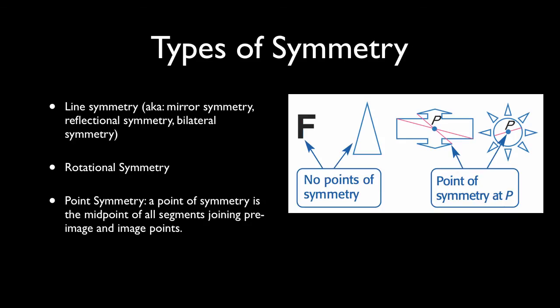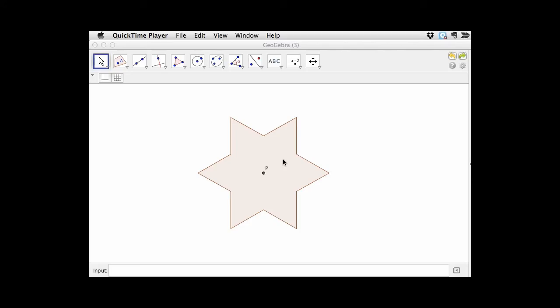And then finally, point symmetry. Point symmetry, a point of symmetry, is the midpoint of all segments joining preimage and image points. A way to check for point symmetry is rotate the object 180 degrees. If it looks the same, then it has point symmetry. So here's an example. This kind of six-sided star has point symmetry because if we put a point on the edge and we take